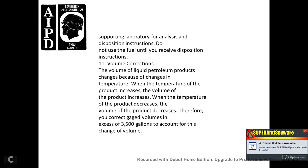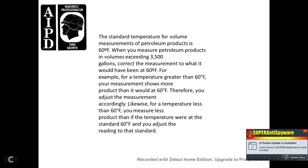11. Volume correction. The volume of liquid petroleum products changes because of changes in temperature. When the temperature increases, the volume increases; when the temperature decreases, the volume decreases. Therefore, correct the gauge volume for volumes in excess of 3,500 gallons to account for this change. The standard temperature for measuring the volume of petroleum products is 60 degrees Fahrenheit. For volumes exceeding 3,500 gallons, correct the measurement to what it would have been at 60 degrees Fahrenheit.